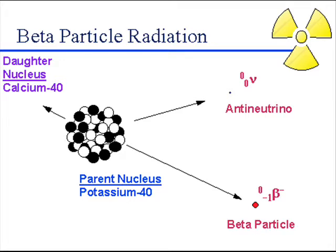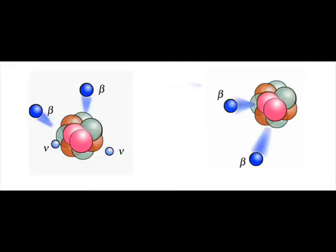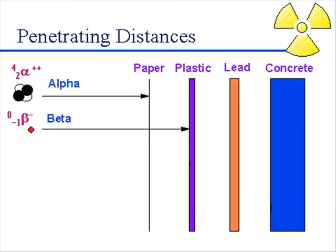Beta particles are high-energy, high-speed electrons or positrons emitted by certain types of radioactive nuclei, such as potassium. Beta particles are a form of ionizing radiation also known as beta rays. The production of beta particles is termed beta decay.